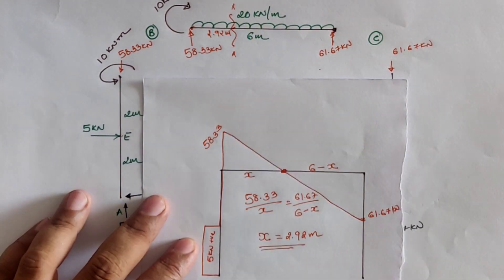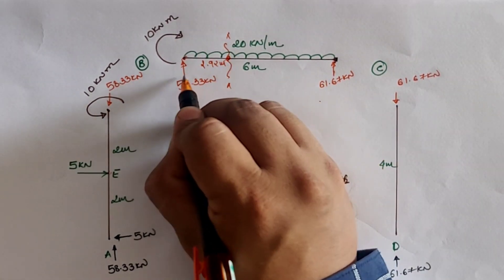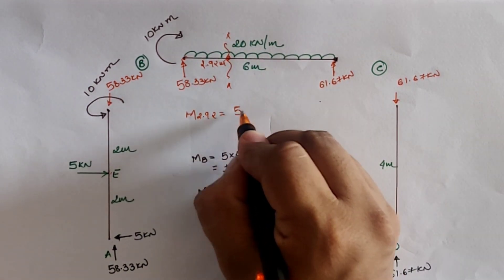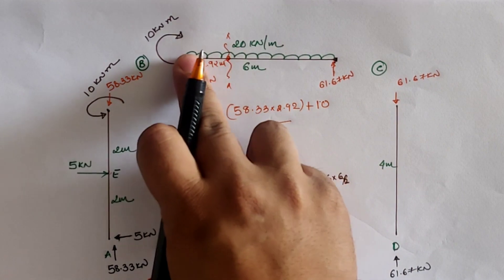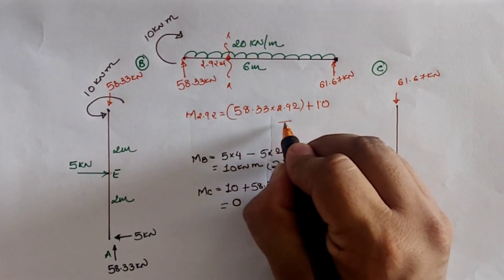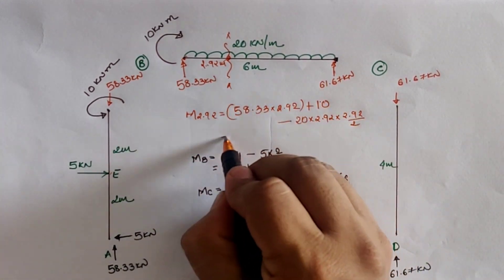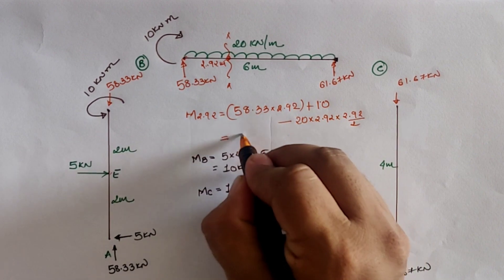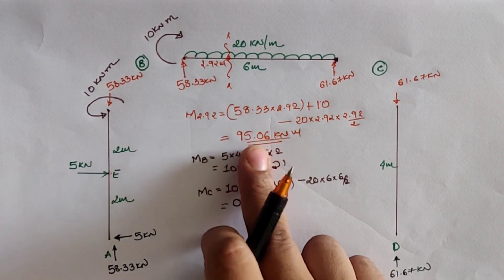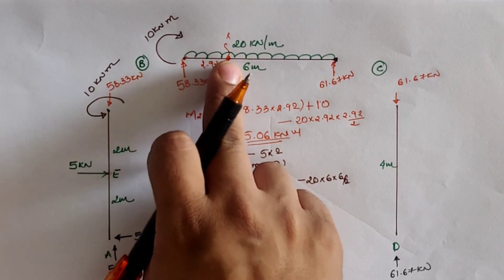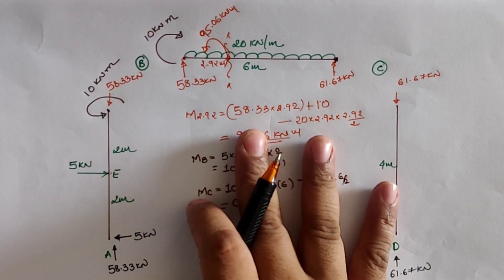The maximum bending moment occurs at 2.92 meters from B. Taking moments at this location: 58.33 into 2.92 clockwise, plus 10 kilo Newton meter clockwise moment, minus 20 kilo Newton per meter into 2.92 into 2.92 by two anticlockwise due to the UDL. Calculating this gives the moment at 2.92 meters as 95.06 kilo Newton meter. This positive value means we apply an anticlockwise moment in the BC span at that point.